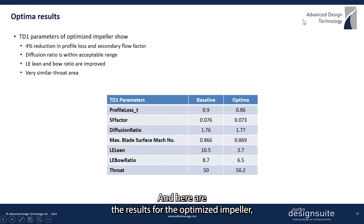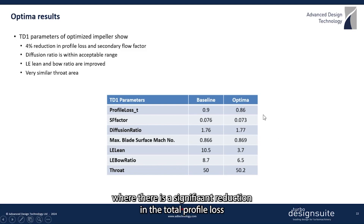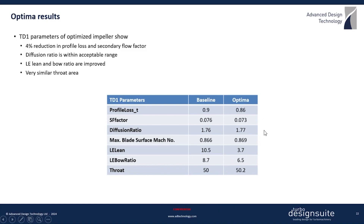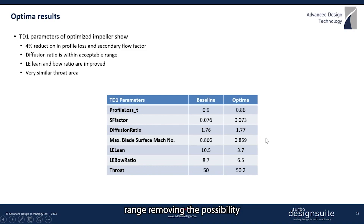Here are the results for the optimized impeller. It's interesting to see the effect on the turbo design performance parameters, where there is a significant reduction in the total profile loss and secondary flow factor as a result of the optimization. The diffusion ratio and maximum Mach number stay within the acceptable range, removing the possibility of flow separation and transonic effects.